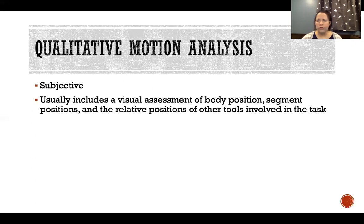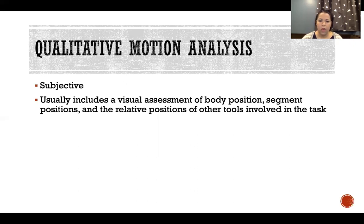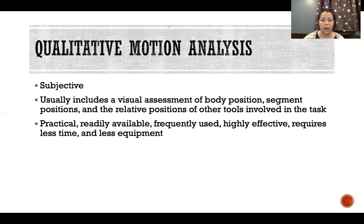It includes a visual assessment of body position, segment positions, and the relative positions of other tools. So it could be like the position of the body, the position of the limbs relative to the golf club that the person is holding, or where they're holding the golf club. It includes both the person and how they're positioned and whatever other relevant tools or things are involved in the task that we're analyzing.